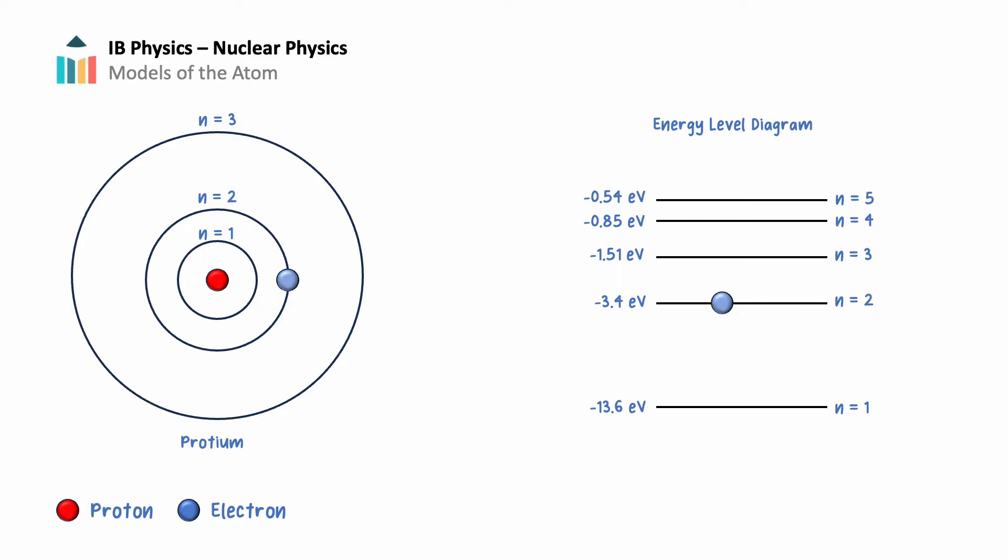As an example, for an electron of hydrogen to go from its ground state to energy level n equals 3, the electron must absorb negative 1.5 minus a negative 13.6, which is equal to 12.09 electron volts of energy. If the electron then jumps down from n equals 3 to n equals 2, it releases a photon with an energy of negative 3.4 minus a negative 1.51, which is equal to a negative 1.89 electron volts of energy.